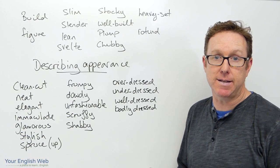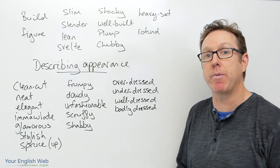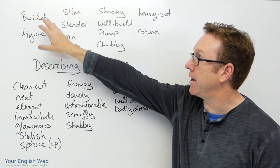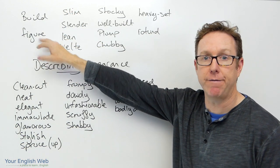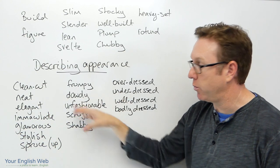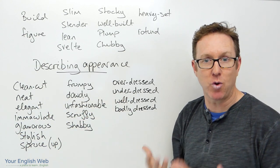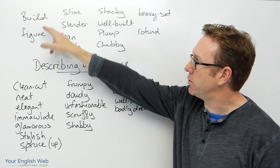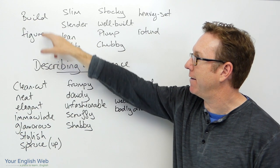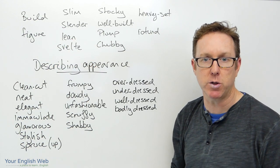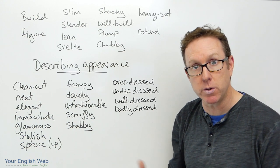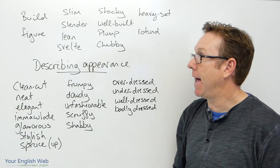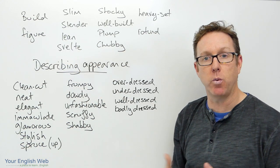Today's lesson is looking at ways that we can describe people's appearance in English. We've got words at the top that are associated with build and figure, and words here that are associated with the way people dress or look in general. When we describe somebody's appearance we often talk about their build for men and women — more common to use 'build' with men and 'figure' with women.